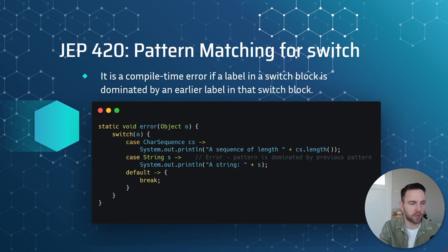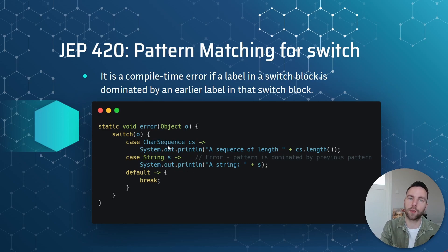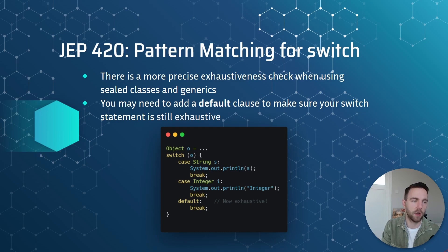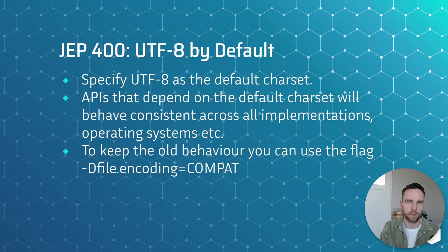You can see an example on the slide here. When you have a case for CharSequence and a case for String, that statement is unreachable because a String already is a CharSequence, and now this will turn into a compile-time error. The other update for pattern matching for switch is a more precise exhaustiveness check when using sealed classes and generics. You may need to add a default case to make sure your switch statement is still exhaustive.